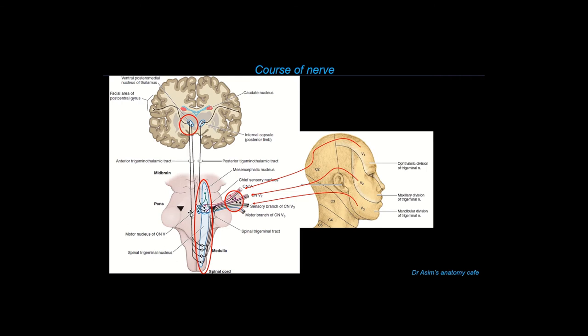The second-order neurons then cross over to the opposite side or decussate, and ascend to synapse with the cell bodies of the third-order neurons inside the thalamus — the main sensory relay station of the brain. The thalamic nuclei which receive sensory information from the face are the VPM nuclei — the ventral posteromedial nuclei — unlike the VPL nuclei, the ventral posterolateral nuclei, which receive sensory information from the body. The third-order neurons then project to the primary sensory cortex in the face region just above the lateral sulcus.